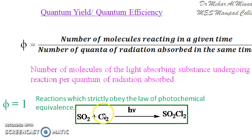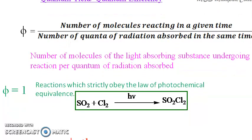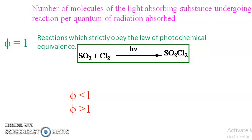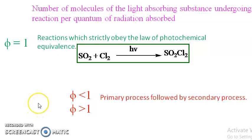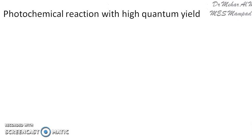For example, the reaction between sulfur dioxide and chlorine to give SO₂Cl₂ in the presence of light obeys the Stark–Einstein law. Here, the quanta of radiation absorbed and the number of molecules reacting in a given time are the same, giving a ratio of 1. Now, phi can also take up values less than 1 or greater than 1. This situation happens when the primary process is followed by a secondary process — meaning not all absorbed light may get transformed into a product.